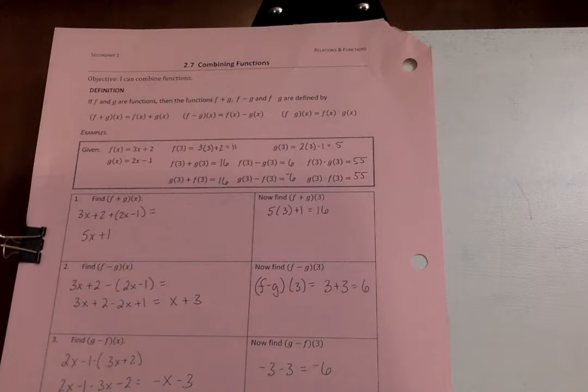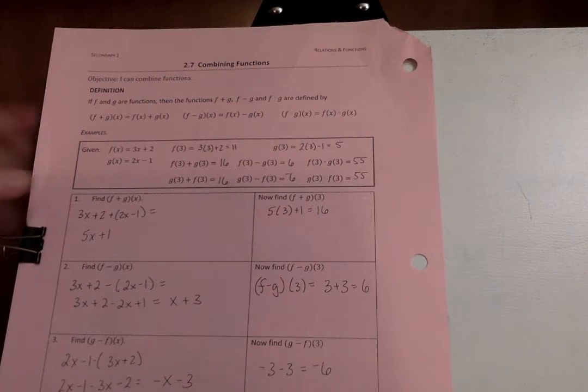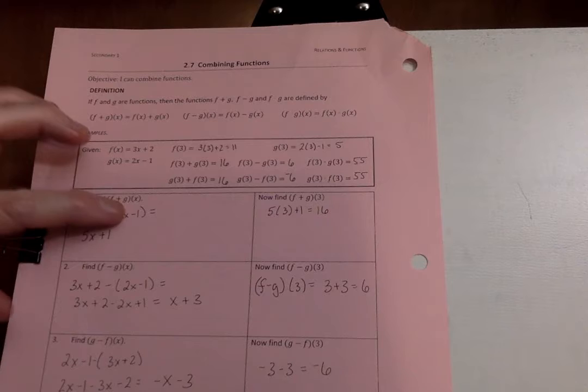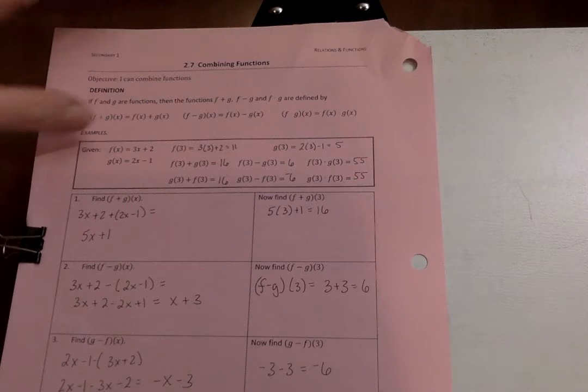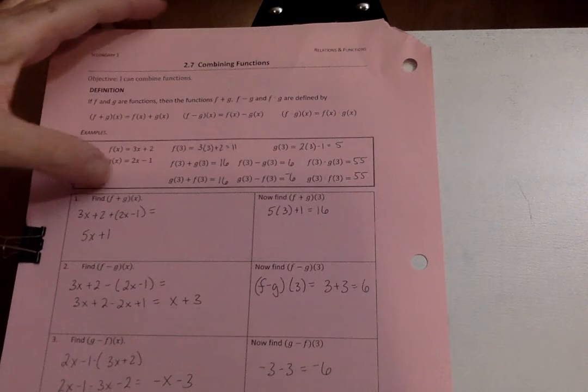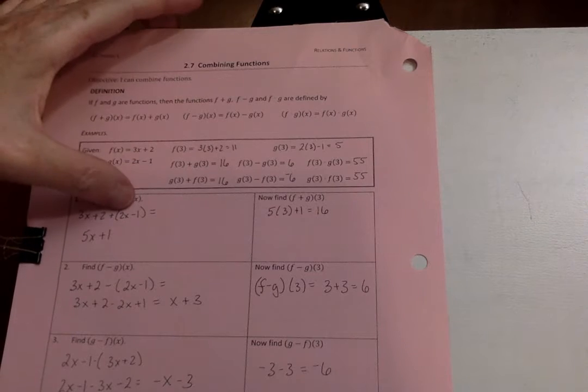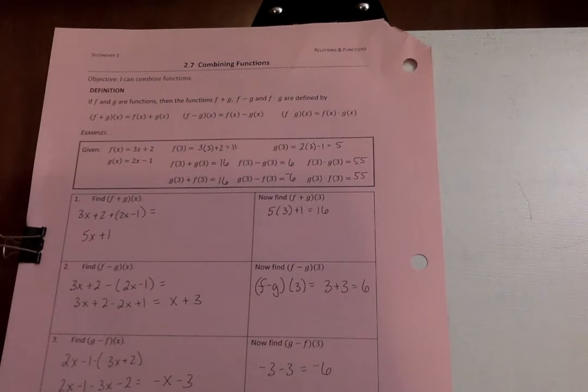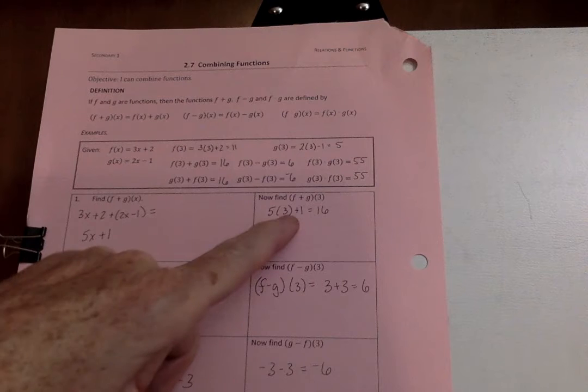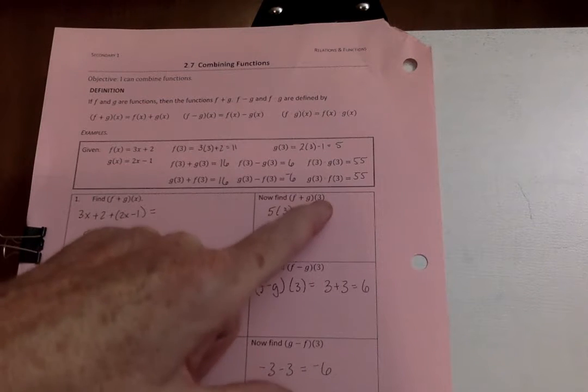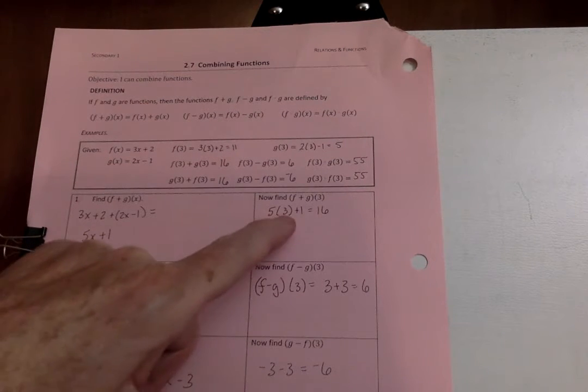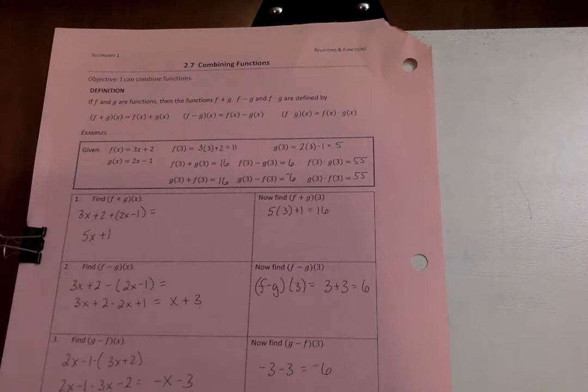So that's a little bit confusing. Let's go ahead and do an example here where it says find f plus g of x. So we put f down here, 3x plus 2, and we add it to g of x, which is 2x minus 1, and we get 5x plus 1. And then over here, if you put 3 in, f plus g of 3, we put 3 in there, 3 times 5 is 15, plus 1 is 16.